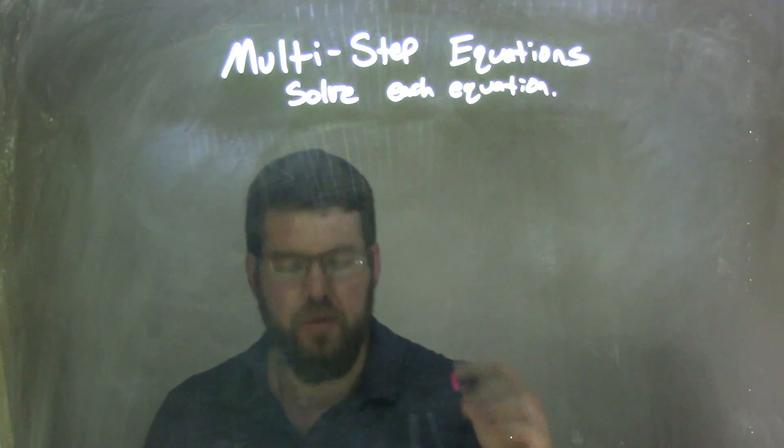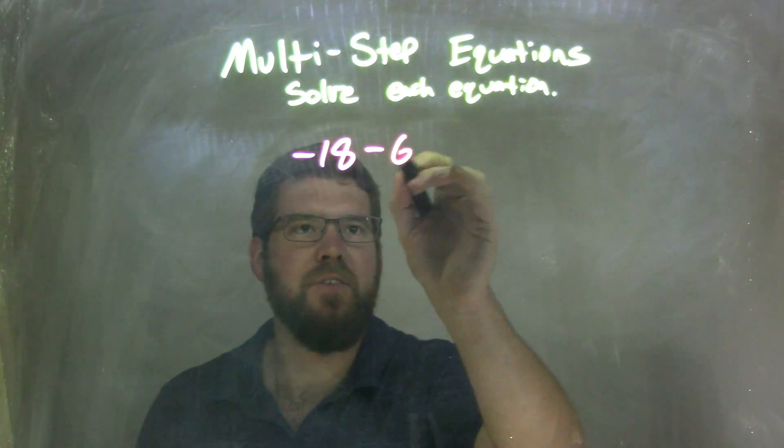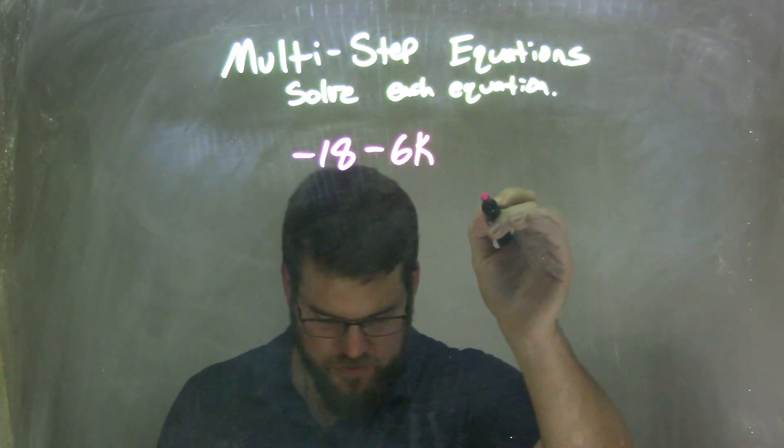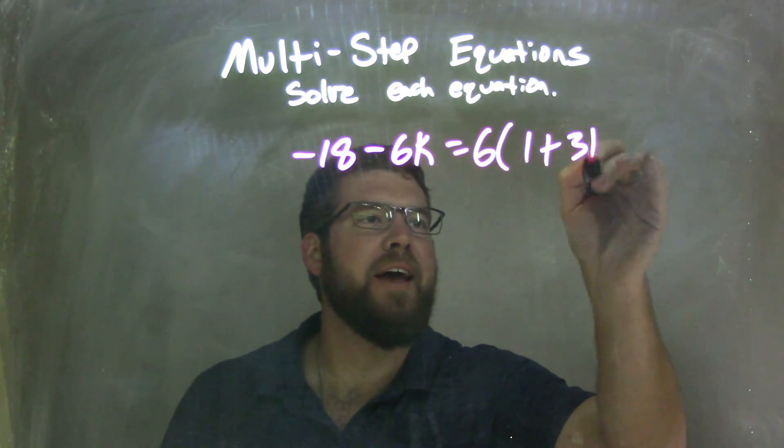So if I was given this equation: negative 18 minus 6k equals 6 times, in parentheses, 1 plus 3k.